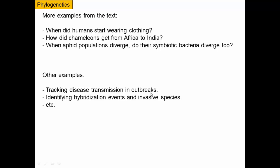For example, tracking disease transmission and outbreaks: if you can build the phylogeny of different strains of a disease, you can figure out where the disease came from and perhaps identify initial transmitters. There was actually a court case where a dentist was convicted of giving his patients HIV, because the phylogeny of his patients' HIV strains were all essentially monophyletic and matched his own HIV, not other HIV from people living in the city. We can also use phylogenies to identify hybridization events and invasive species. Using a phylogeny to understand the history of taxa allows you to answer any question about those taxa, and since the present is determined by the past, these techniques allow us to learn a lot about the present.